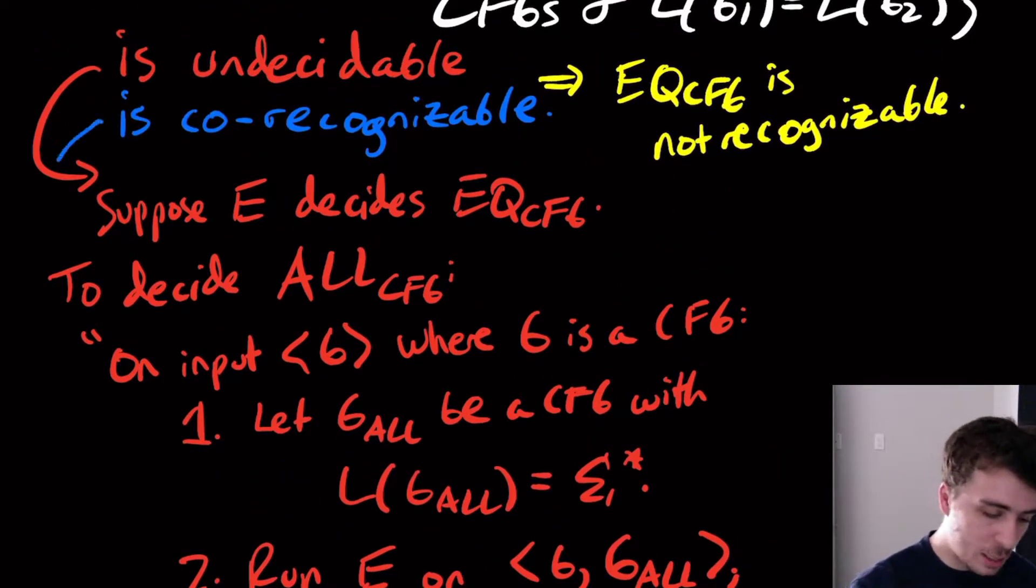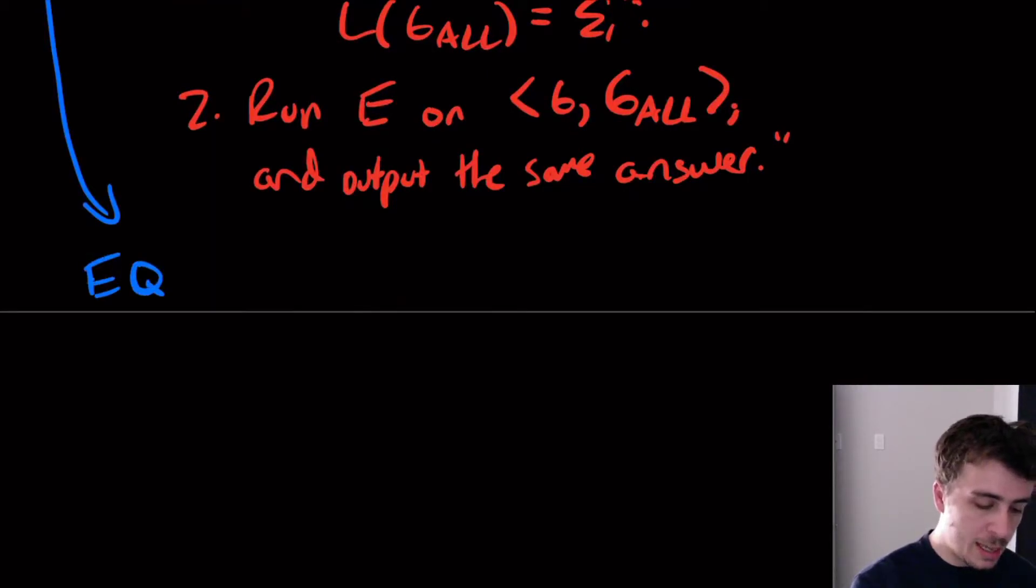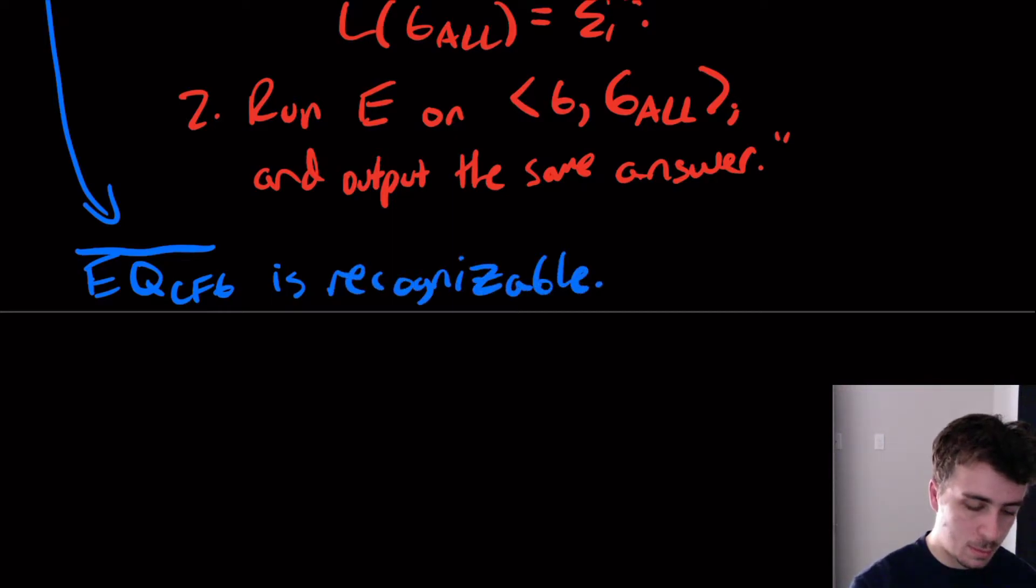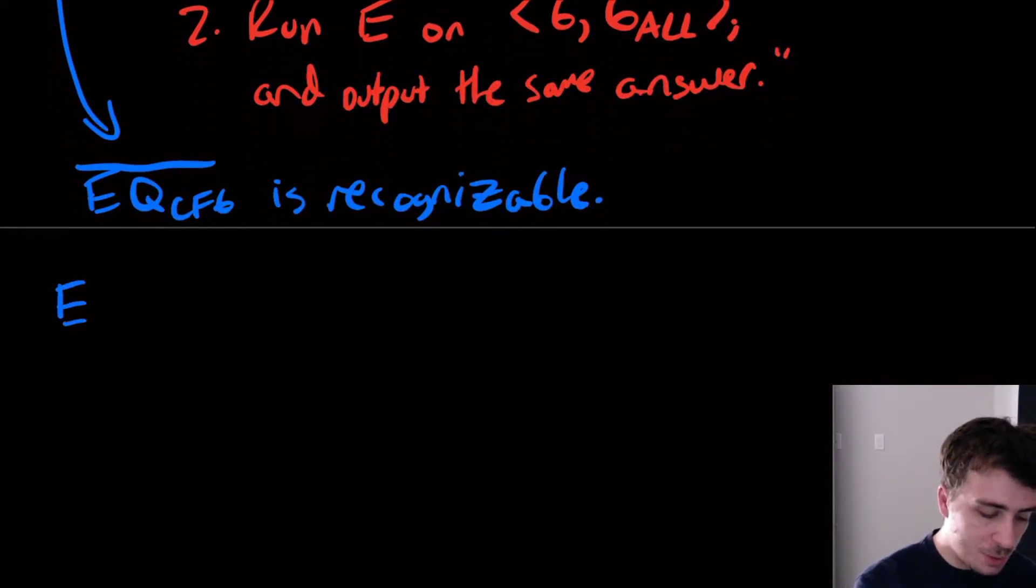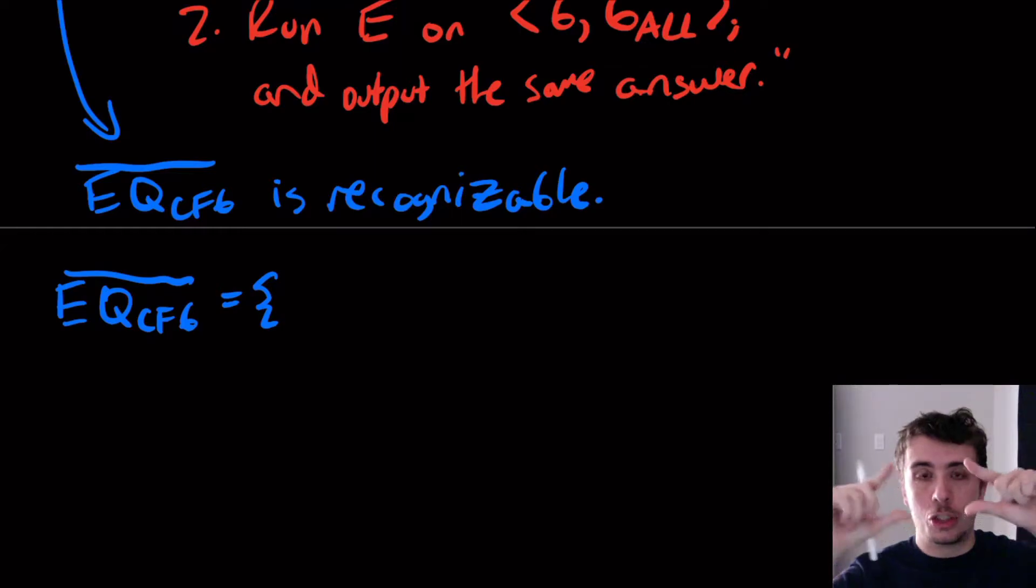Let's prove that the complement is recognizable. So we're going to show here that EQ_CFG complement is recognizable. We have to be absolutely clear what this is. The complement is, we got to include all badly formed inputs first, because if it doesn't encode two CFGs, then it's in the complement.